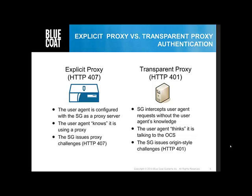After the client is configured for explicit proxy, all user requests are sent to the Proxy SG rather than the Origin Content Server, or OCS. The Proxy SG appliance will then determine whether to allow or deny the request based on proxy service and policy configuration settings. For allowed transactions, the appliance will either service the request locally, for example by returning cached objects, or if necessary, it will send a request to the OCS on behalf of the client.